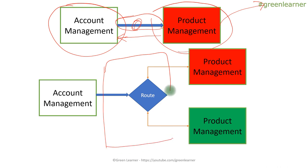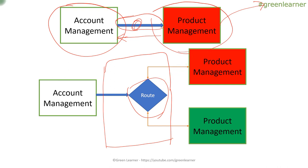I have to come up with a route at this point. This route, in programming terms, is essentially an if-else block. Based on some condition, it is going to call the old flow — the monolithic way — and in some condition it is going to call the new flow, which is the Product Management microservice.